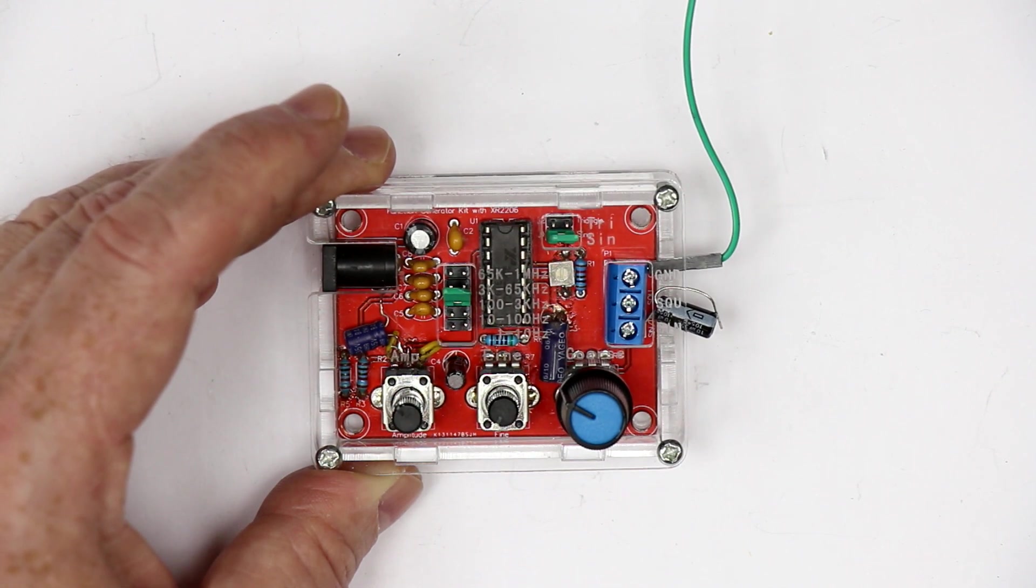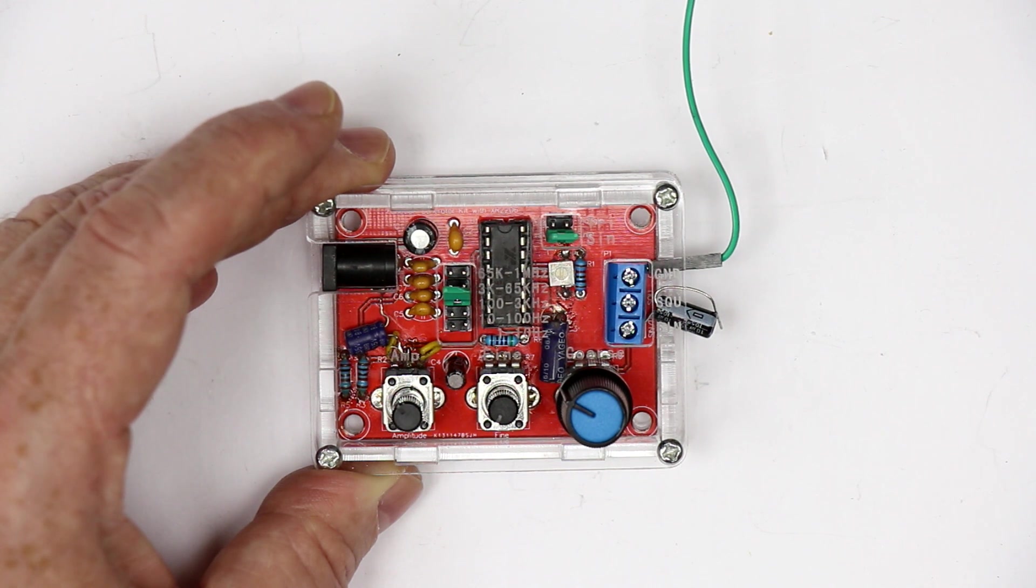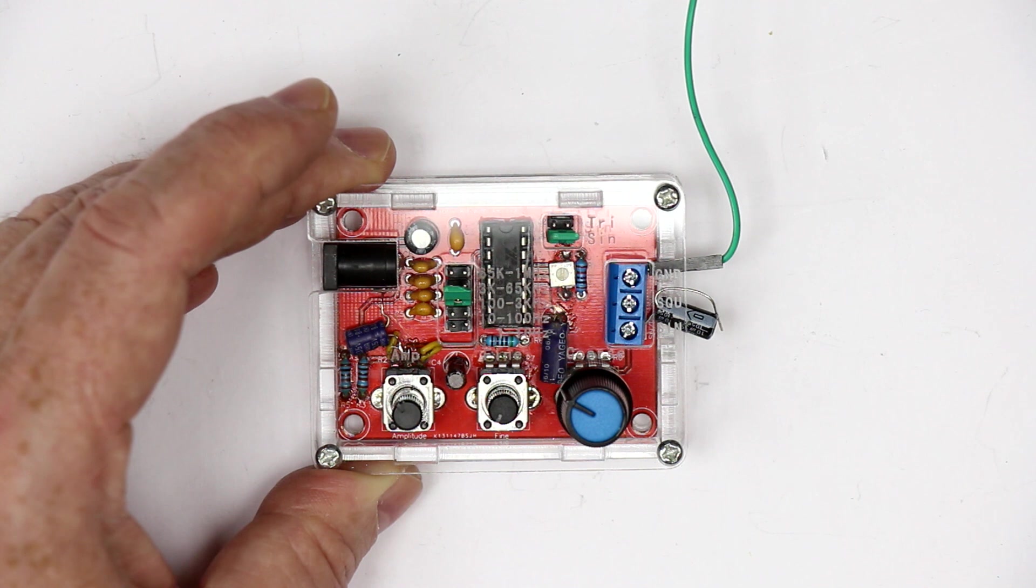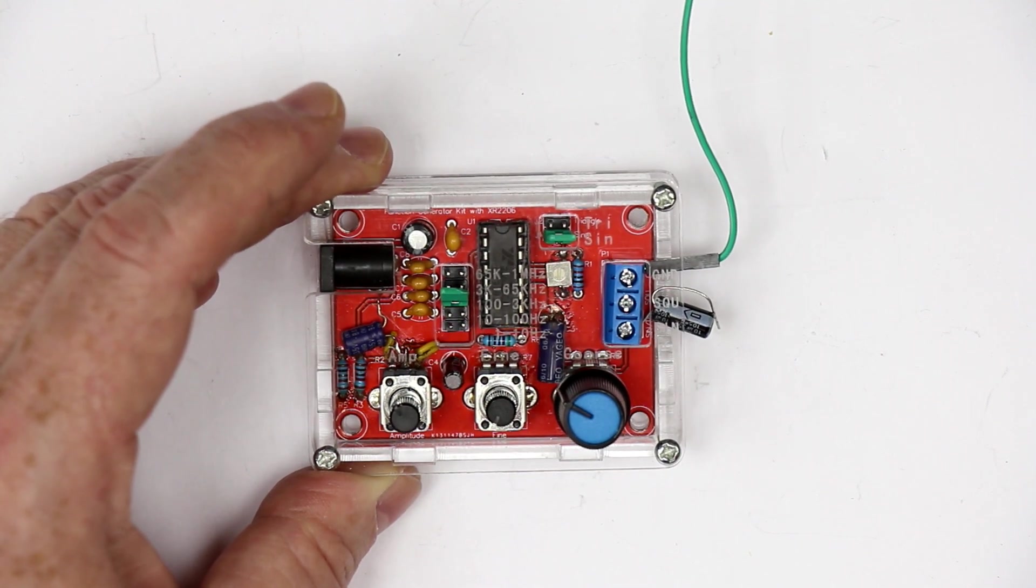When I closely inspected it I found this was not an original XR chip but a fake Chinese counterfeit. It works basically the same but only goes to 12 volt supply voltage, and above that the oscillation starts to go havoc.